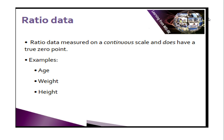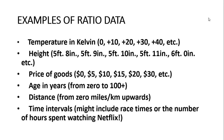For example, age — you come into the world from zero, then go to one month, two months, three months, one year, and so on. Weight also has a zero point; height also has a zero point. More examples of ratio data include temperature in Kelvin and the price of goods.